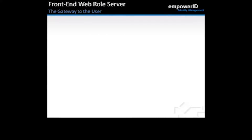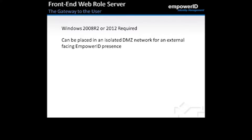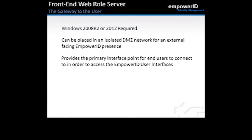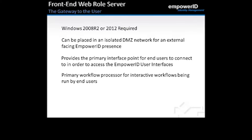Now finally, the web role server — the gateway to the user. Once again, we require Windows 2008 R2 or 2012. The web role server can be placed in an isolated DMZ network for an external-facing Empower ID presence, or on the internal network for internal users. It provides the primary interface point for end users to access Empower ID, and it is also the primary workflow processor for interactive workflows run by end users.